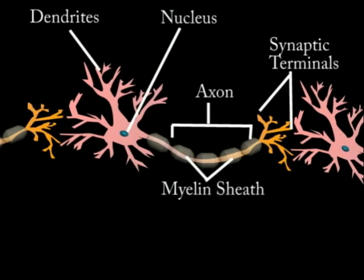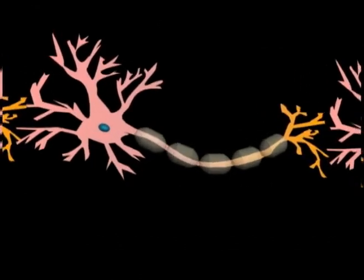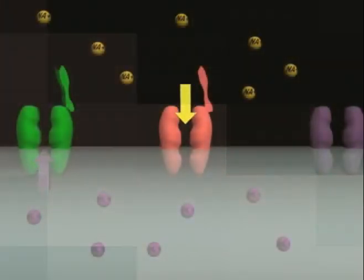The myelin sheath coats and protects the axon, and the synaptic terminals transmit the impulses to the next nerve.